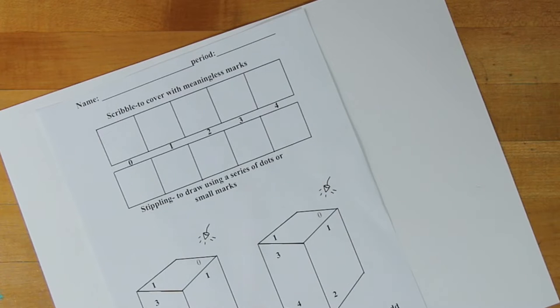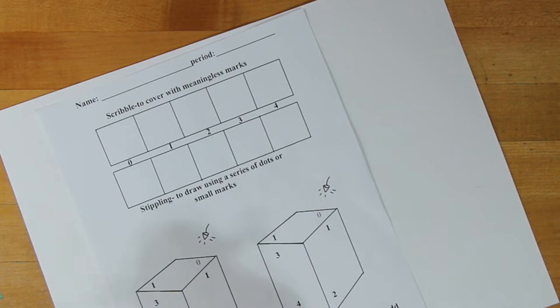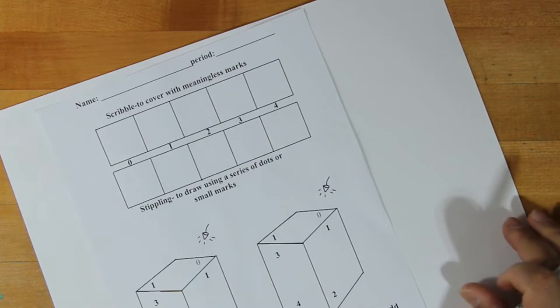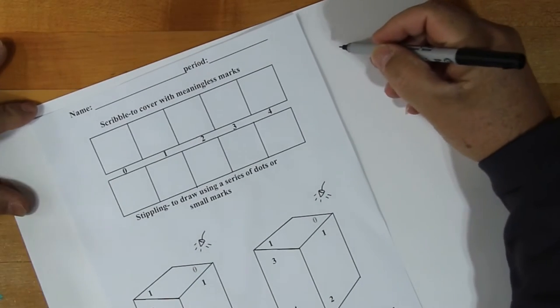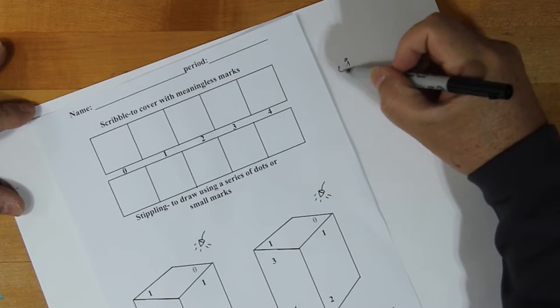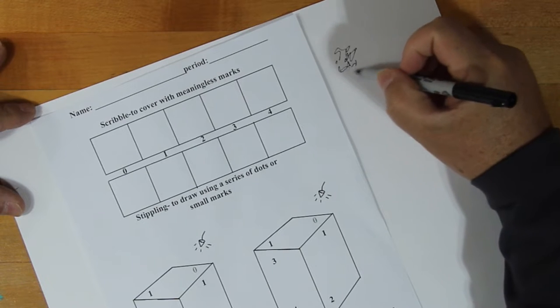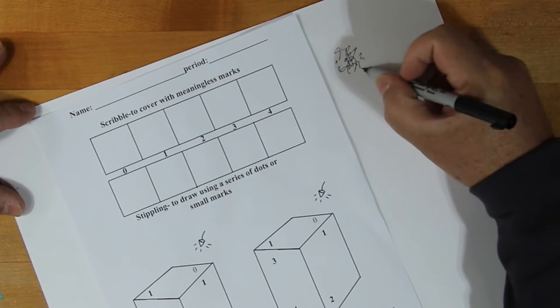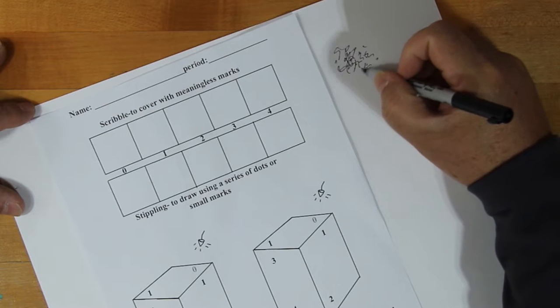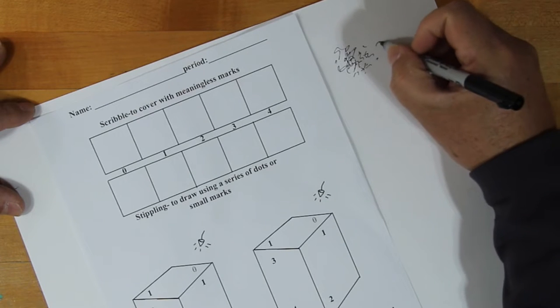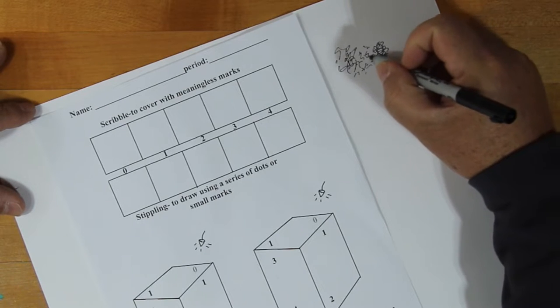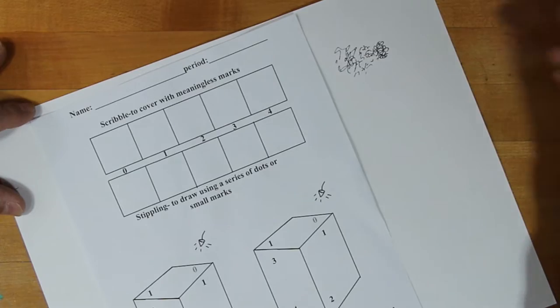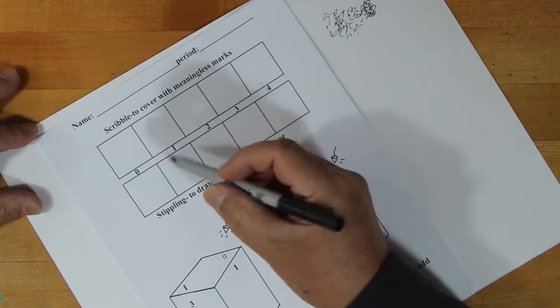So let's take a look at the scribble. Scribble is actually pretty easy to do, but it's easy to get carried away with, so you have to be a little bit on the careful side. Scribble is just a matter of putting in totally random lines that don't have any meaning or purpose. Try to avoid creating patterns. Sometimes we do that, but for the most part, you want these to be pretty random.